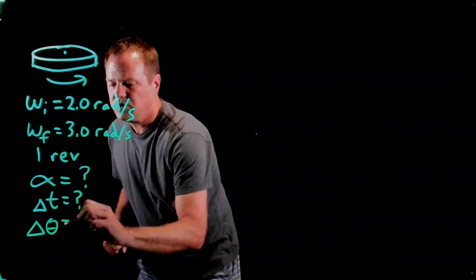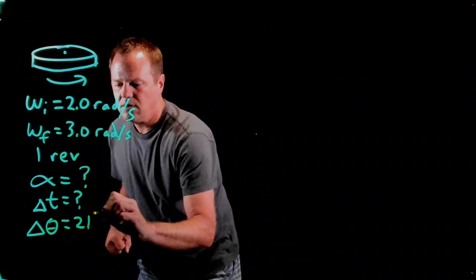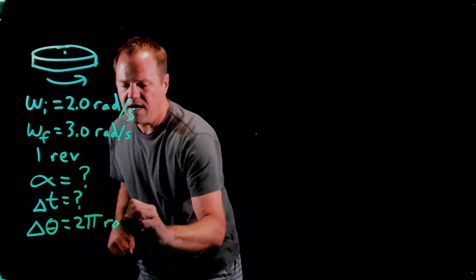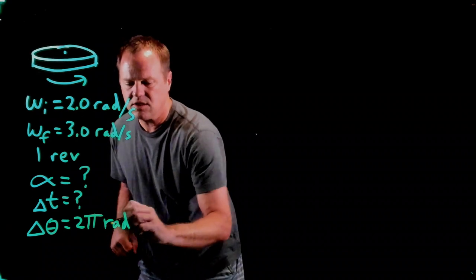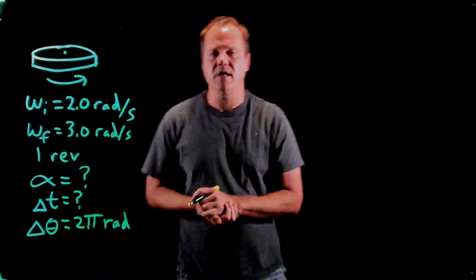So one revolution, pretty easy, is 2π radians. We want to use a consistent system of units. Typically we want to use SI as we do in a lot of physics.